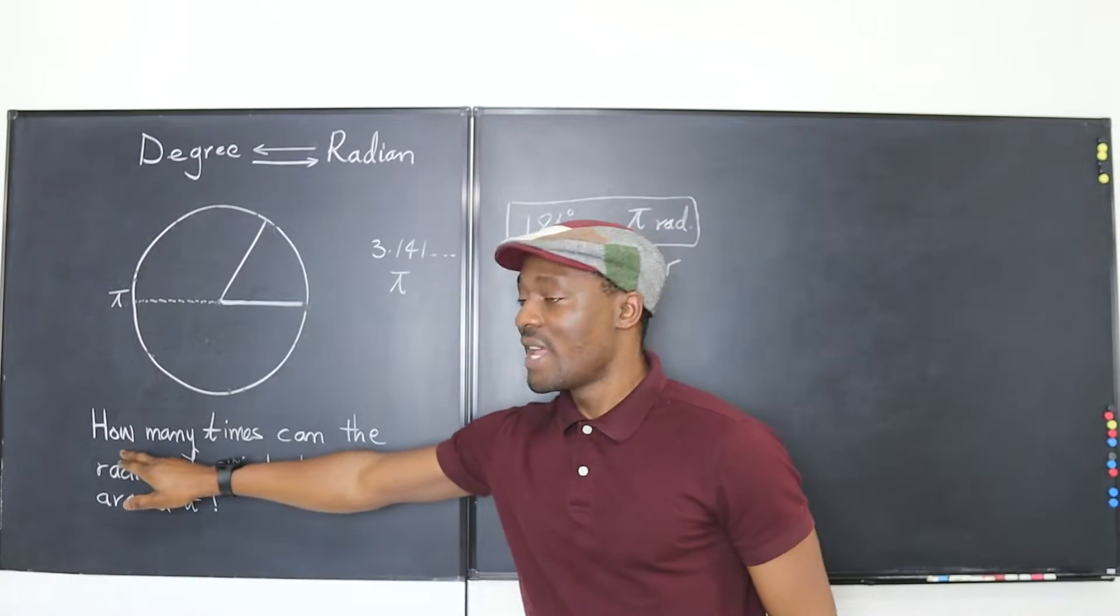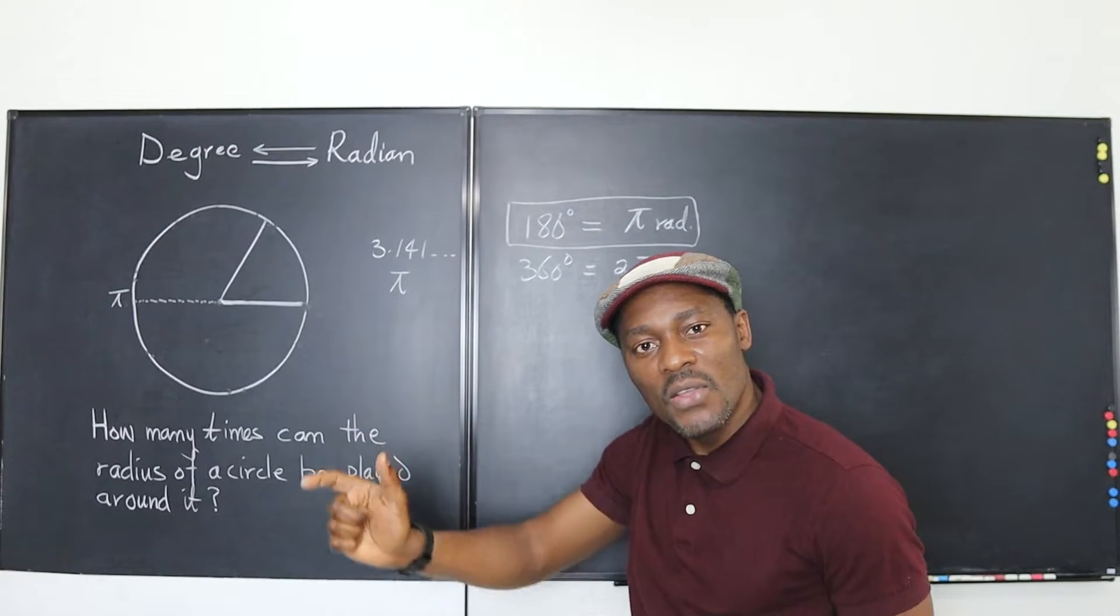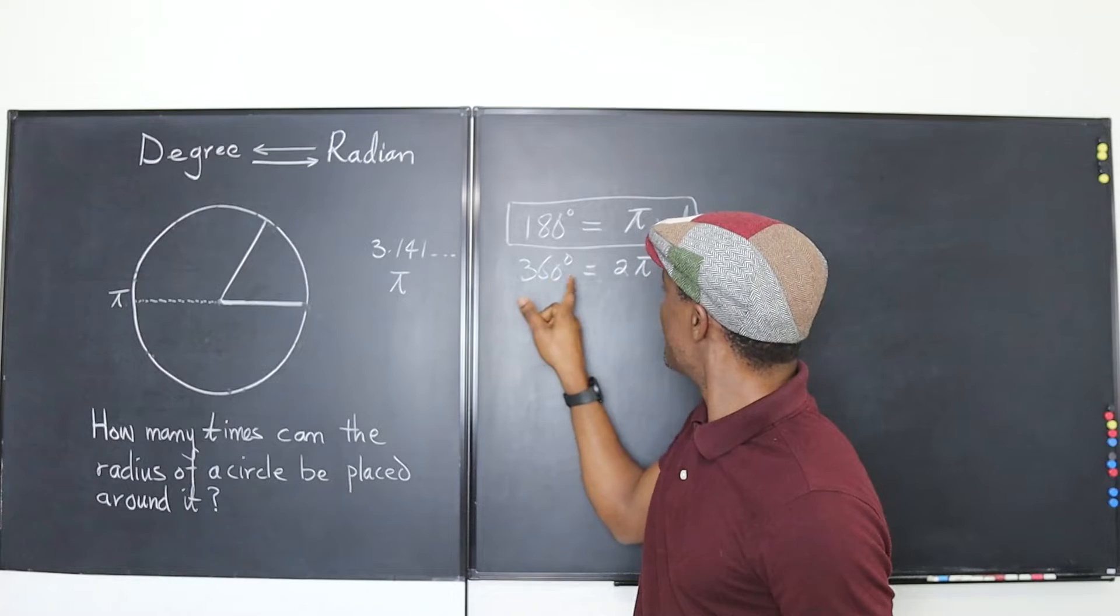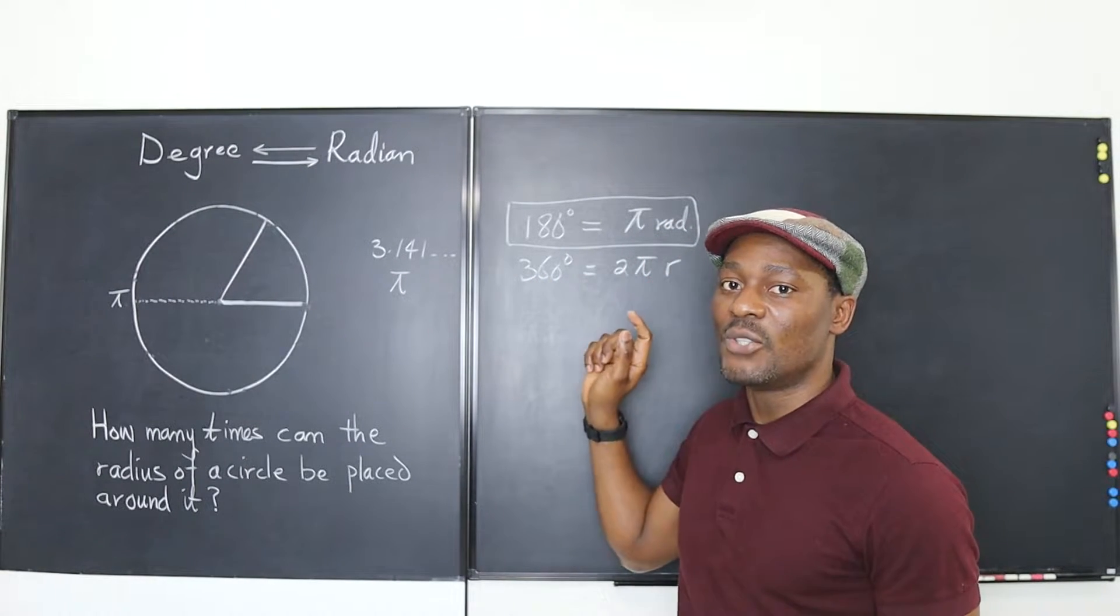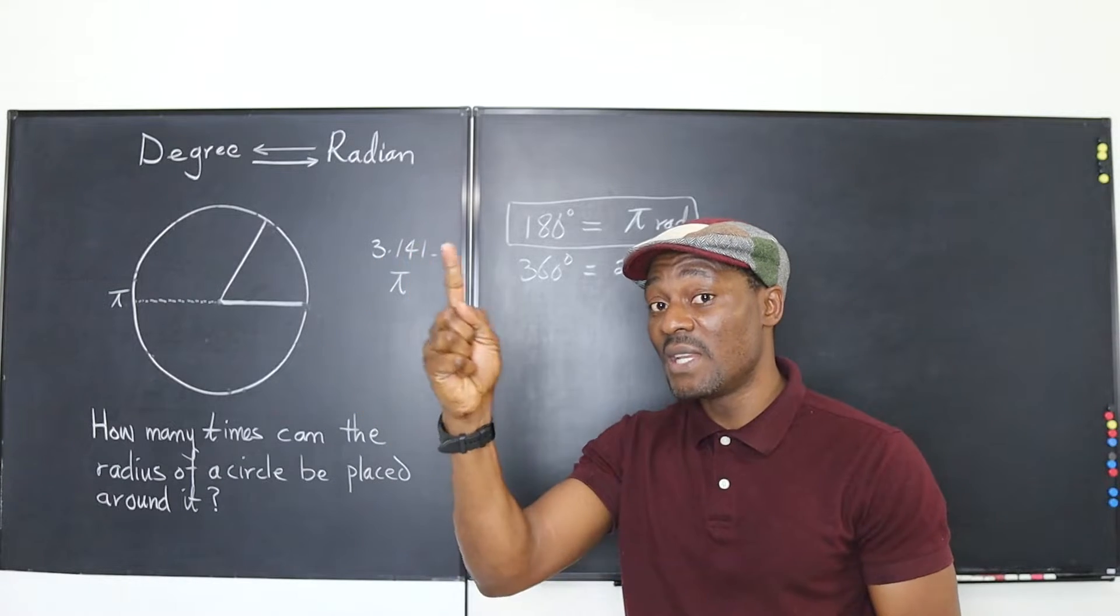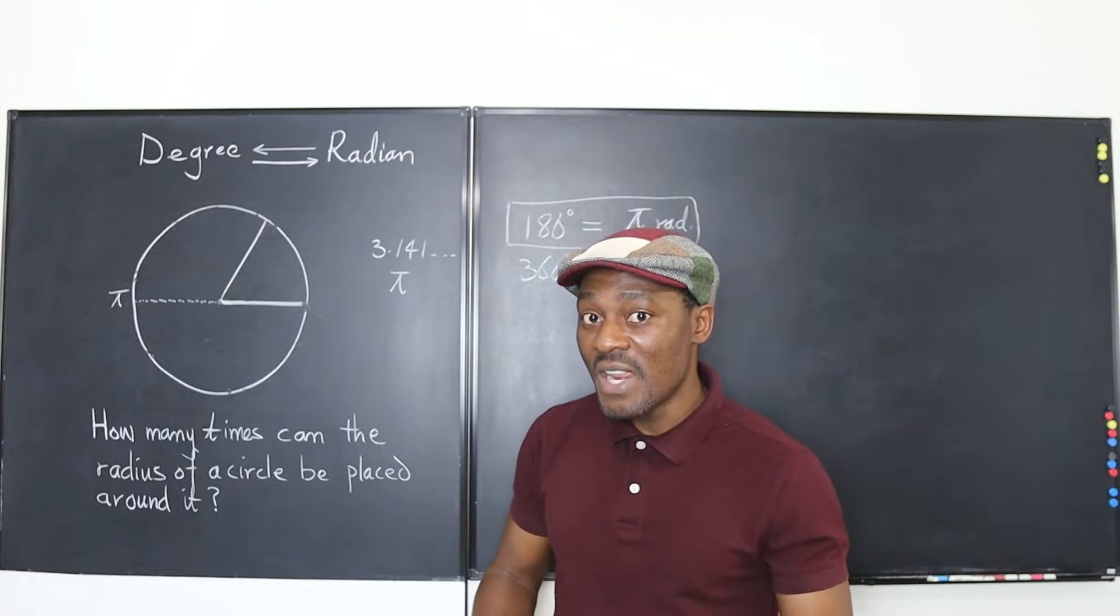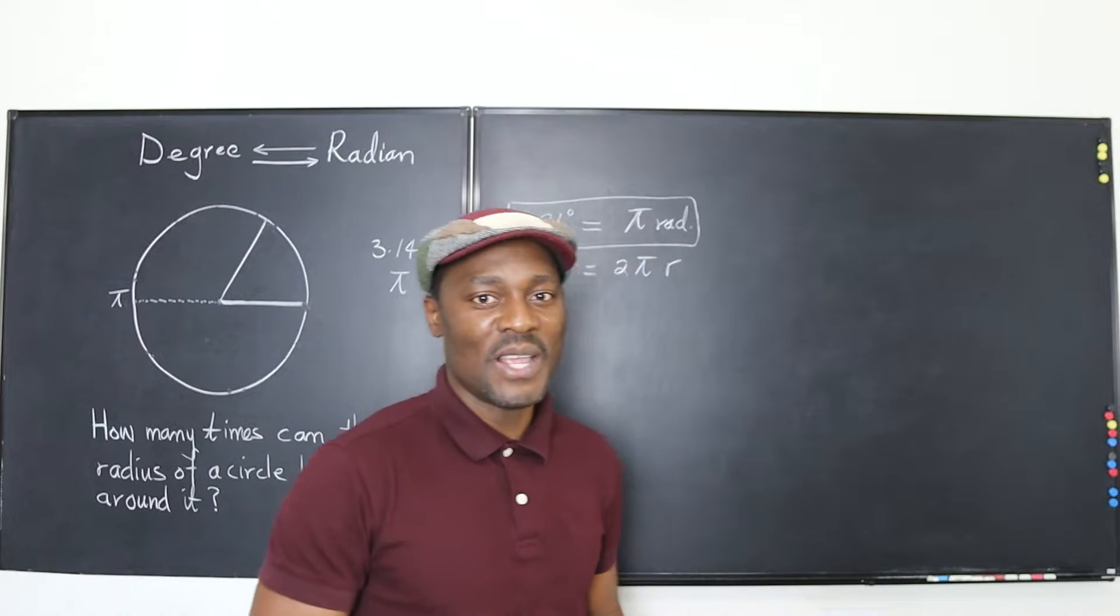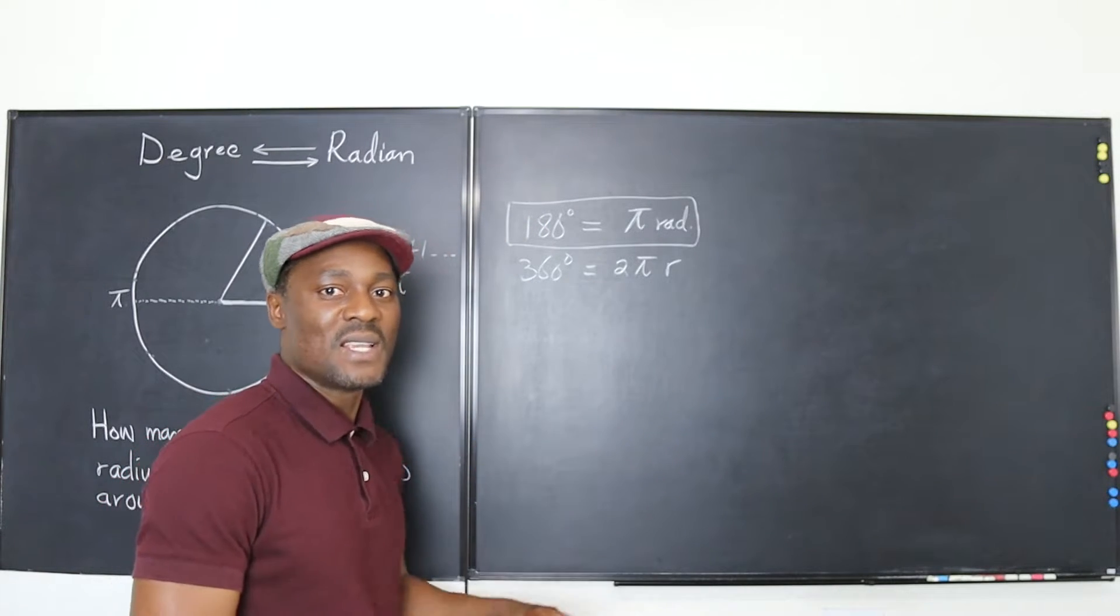So the question has been answered. How many times can the radius of a circle be placed around it? Well it's gonna be 6 point whatever 2 pi, 2 pi times. Just know what pi is and then multiply that by 2 and that's the number of times the radius can be placed around the circle. Now that you understand what degree is and what radians is then why don't we just do some calculations. Take some examples and convert from degrees to radians or from radians to degrees.